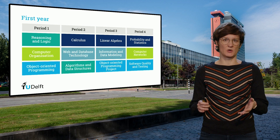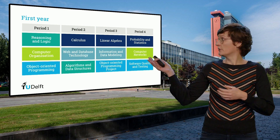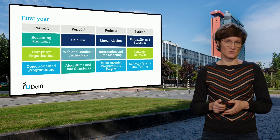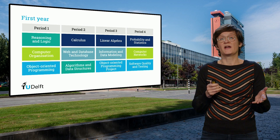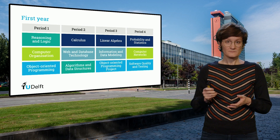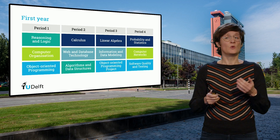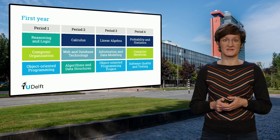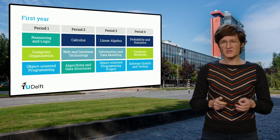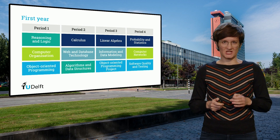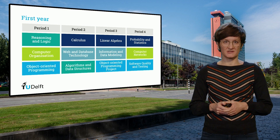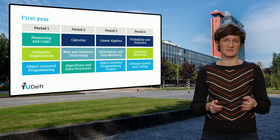As indicated with the color coding on the slide, in the first year you will have three mathematics courses indicated in dark blue. You will have courses on logic and algorithms indicated in darker green, and also courses on software and programming, which includes the object-oriented programming project as a separate course, indicated in lighter blue. It is important to note that we do not expect you to be able to program when you join us in your first year. We have preparatory programming courses, after which you will have a flying start in our bachelor's.